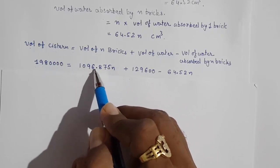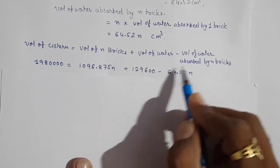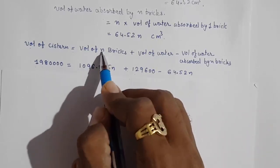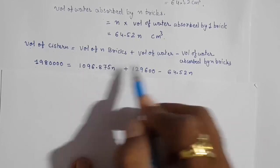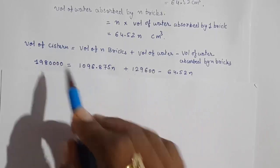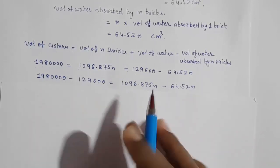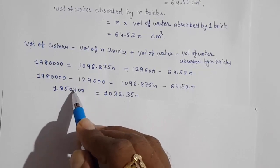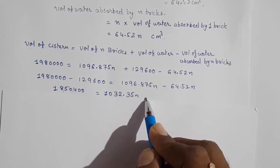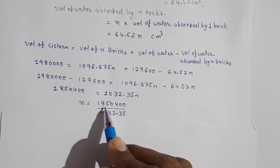Substituting the values: 19,80,000 = 1096.875 × n + 129,600 − 64.52 × n. Taking like terms together: 19,80,000 − 129,600 = 1096.875n − 64.52n. This gives us 18,50,400 = 1032.35n.